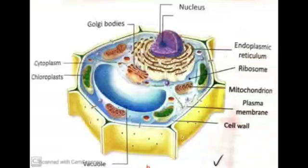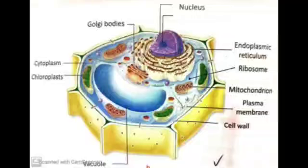Good morning Class 9 children. We were doing the cell organelles and we have done endoplasmic reticulum, mitochondria, then Golgi apparatus. So today we'll take up the next, that is plastids. Plastids are cell organelles which are present only in plants.